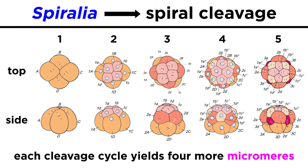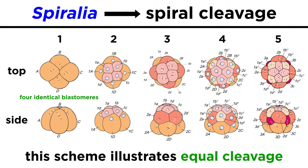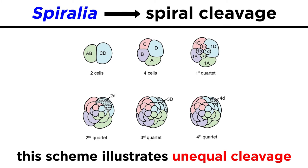It's worth noting that this isn't the only way that spiral cleavage occurs. We have just described equal cleavage, since the first two cellular divisions produced blastomeres that were indistinguishable from one another. However, in unequal cleavage, the first two cell divisions produce four cells in which one cell is bigger than the other three, and thusly designated as the D-blastomere.